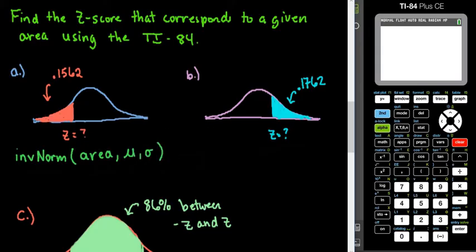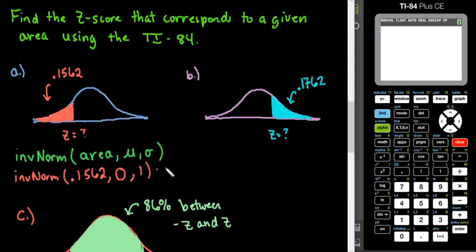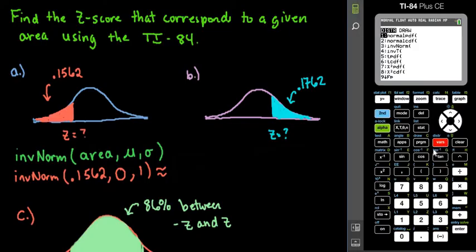For this particular question, we are finding the inverse norm for the area of 0.1562 — that's just the area that's shaded in, that's your probability. The mean — remember that for a standard normal, since we're looking for a Z-score — corresponds to the standard normal table, which has a mean of 0 and a standard deviation of 1. We would just plug this into our calculator. To get there, we're going to do second, distributions, and option 3.